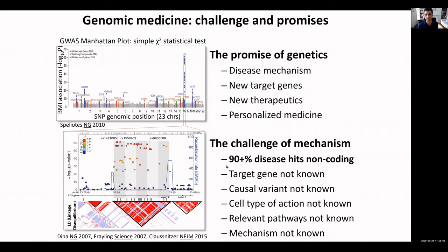The challenge is that 93% of disease association hits lie in non-coding regions, where the target gene is not known. For FTO, for example, we have shown that the true target gene is actually 1.2 million nucleotides away. Additionally, 89 common variants are co-inherited but only one appears to be causal, the cell type of action is not known, and the relevant pathways and mechanisms are not known.